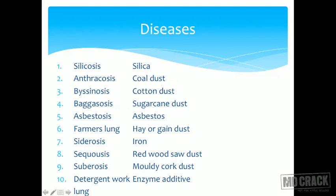The extended list of pneumoconiosis diseases: silicosis is caused by silica. Anthracosis is caused by coal dust. Byssinosis is caused by cotton dust. Bagassosis is caused by sugar cane dust — a mnemonic: the leftover pulp after extracting sugar cane juice can make a bag, so sugar cane dust causes bagassosis. Asbestosis is caused by asbestos. Farmer's lung is caused by hay or grain dust — farmers are exposed to both.